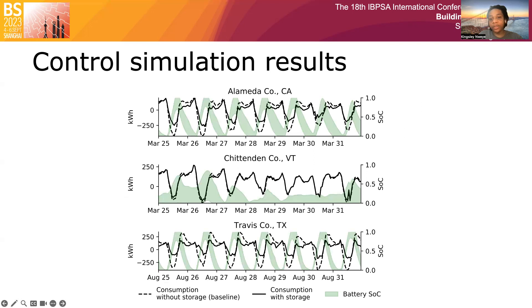Profiles in California and Texas show the ability of the controlled storage systems to take advantage of daytime solar generation for charging and release stored energy in the evening, thus reducing aggregated grid loads during peak periods. Vermont's profiles for cases with and without storage are very similar, as the controllers do not learn the load shifting task as in the other two neighborhoods. The battery state of charge distribution in Vermont shows irregular charge and discharge patterns and underutilized battery capacity for load shifting, which could be attributed to suboptimal controller performance due to our reward function design.